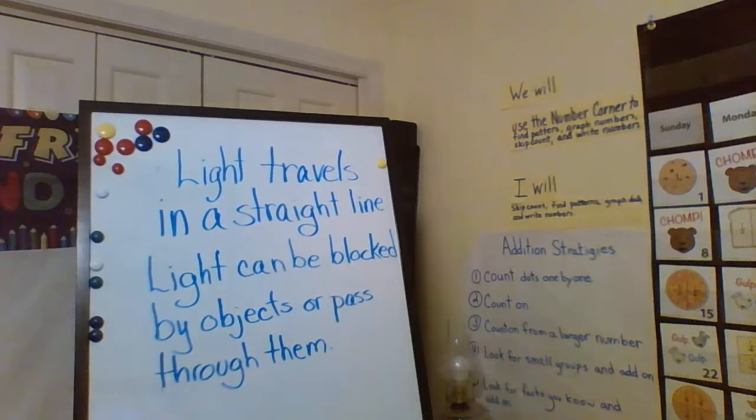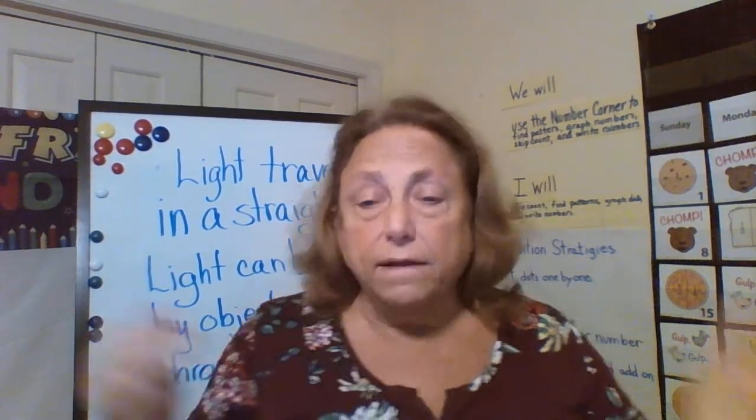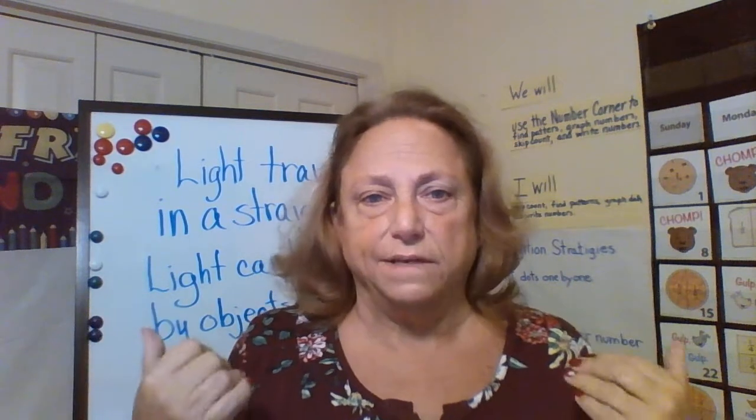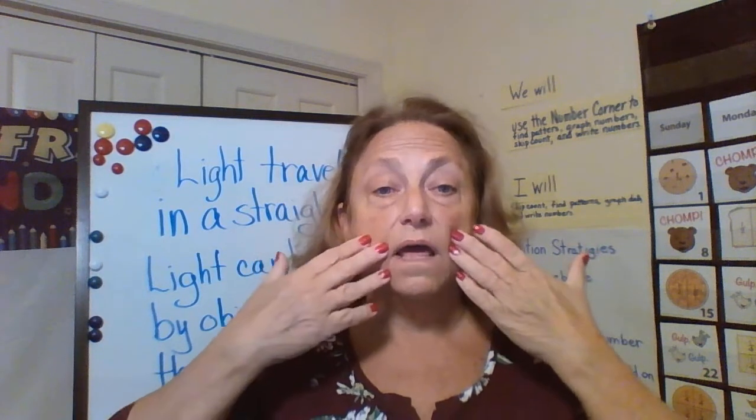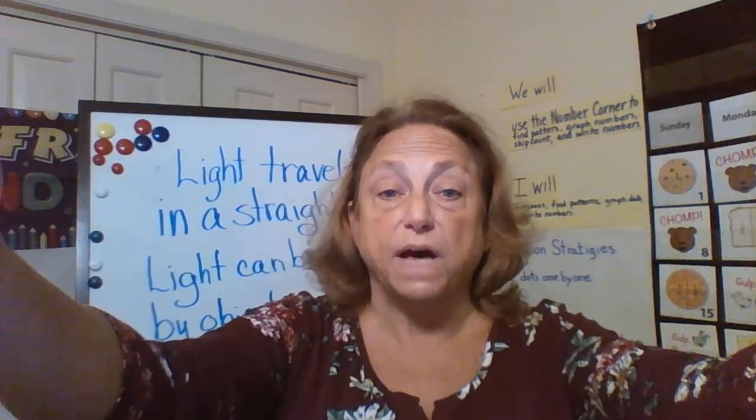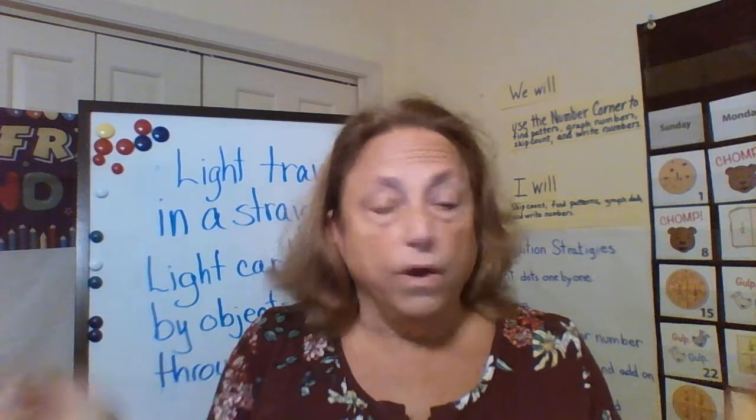Wait a minute — I can't see much. I can't see too much because there's no light. Let me fix that. Oh, that is so much better. And without light, we can't see things, because the way we see is the light reflects off of us and bounces back to our eyes. So we have to have light. We've talked about that — that's something we already learned.